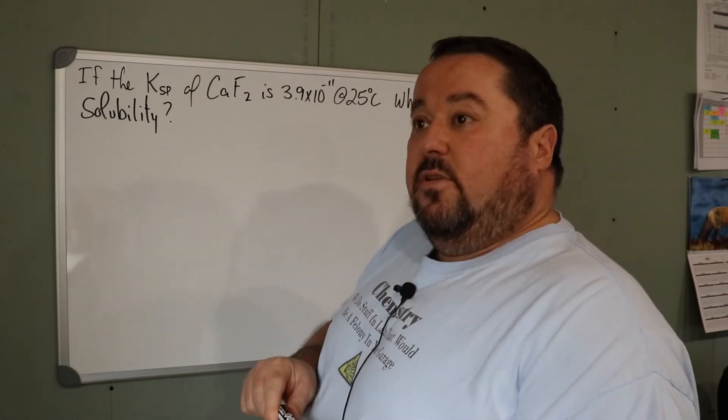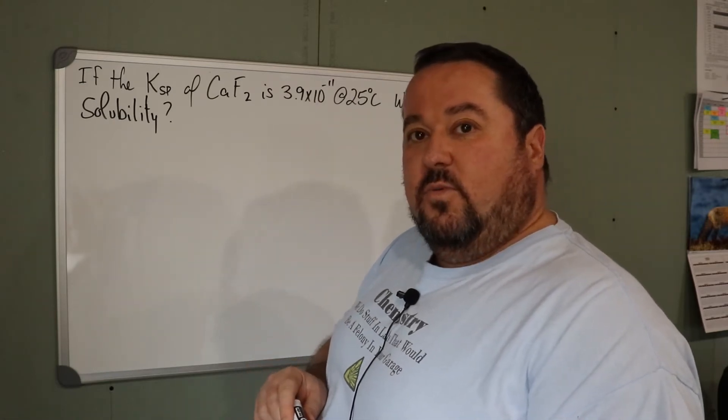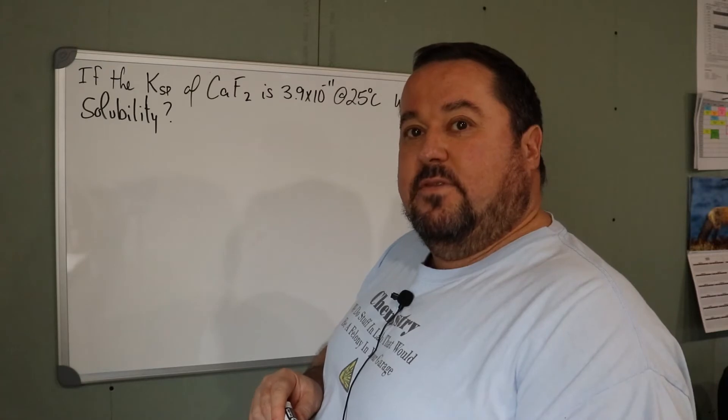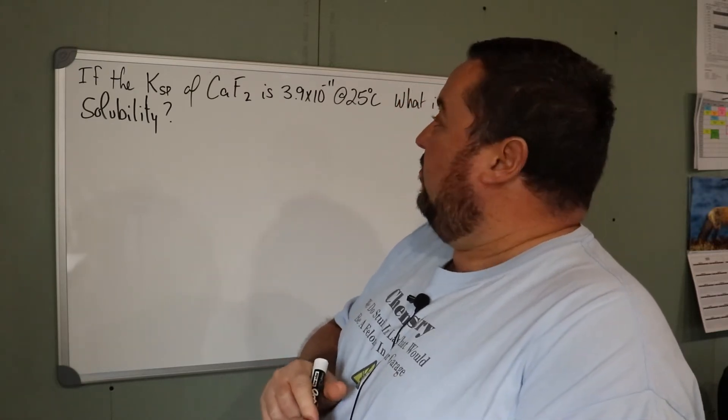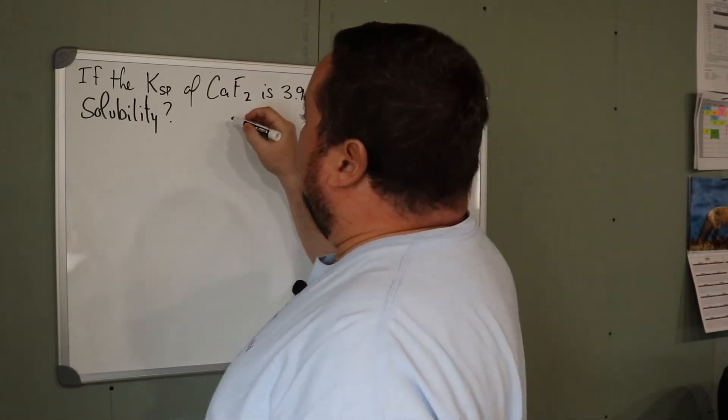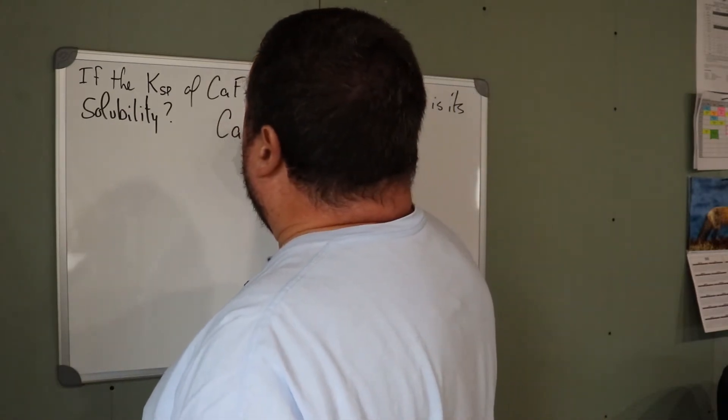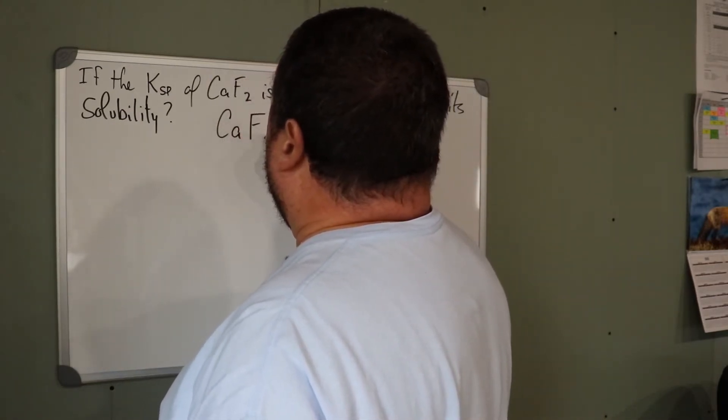This example is not one-to-one, so we'll show you what happens when that's the case. Again, we start the same way though. We need to write a dissociation equation for this sparingly soluble compound.